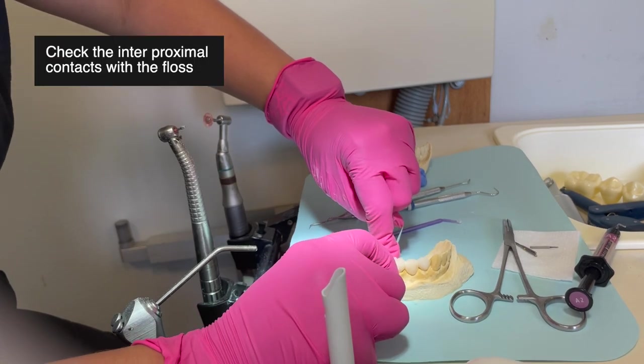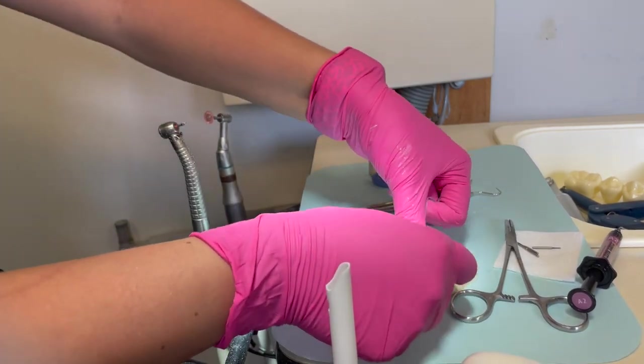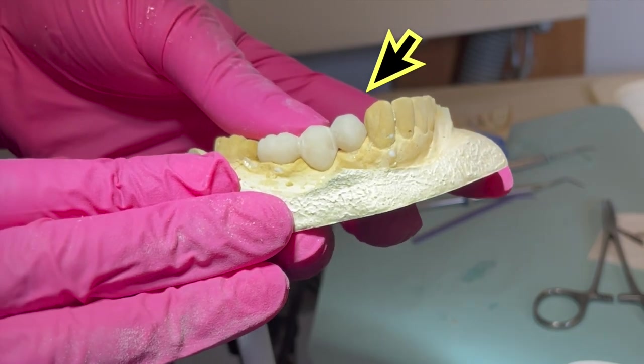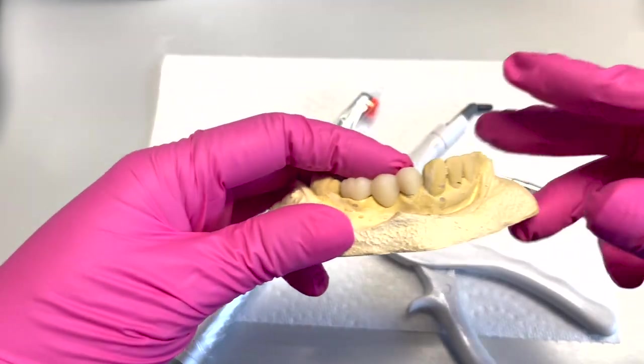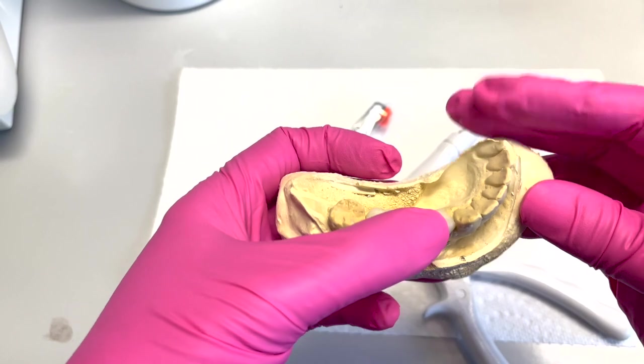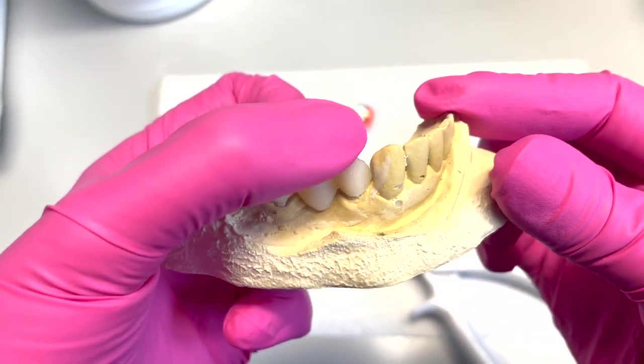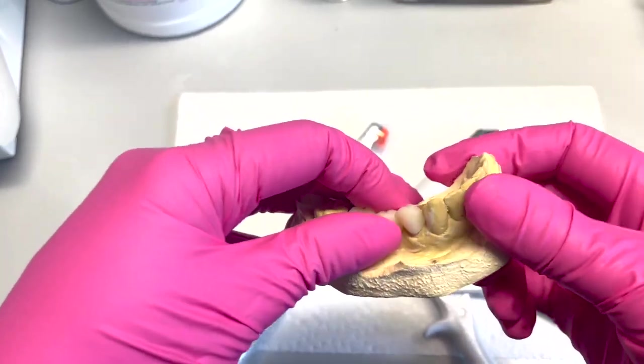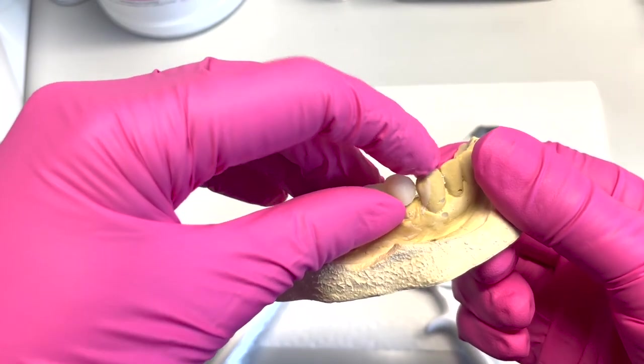Then you're going to check your interproximal contacts with the floss. Also make sure to use the floss threader to go underneath the embrasures. Everything should feel really tight, and now you have your final product. Now I do not like the aesthetics on that premolar, so let's fix that. When I was editing the video, I noticed that right here on the mesial, it's not ideal. If you were working on a patient, you probably want to correct that little space so that aesthetically it looks better.